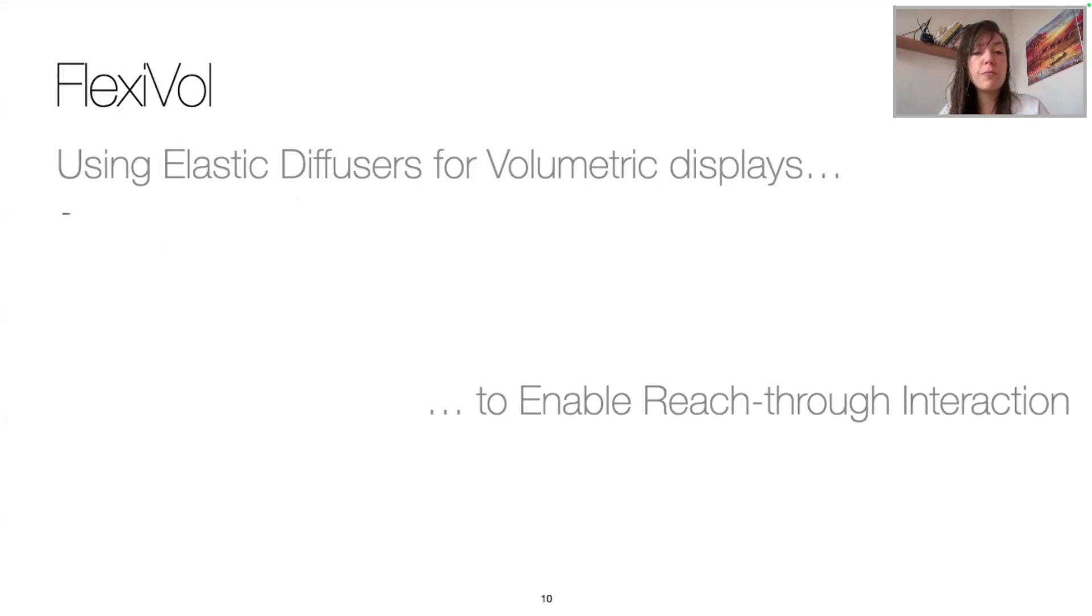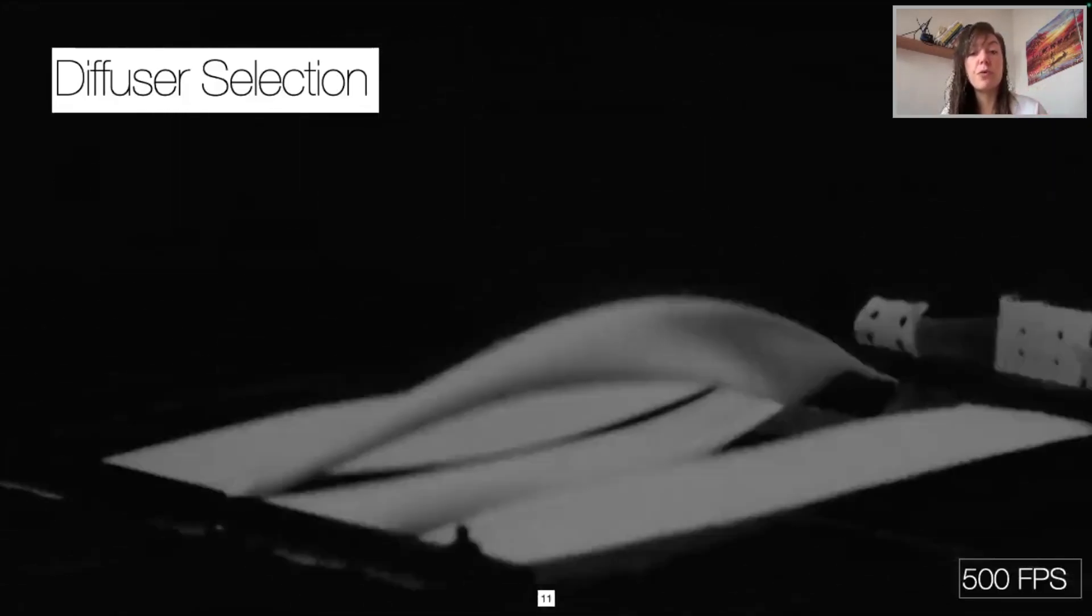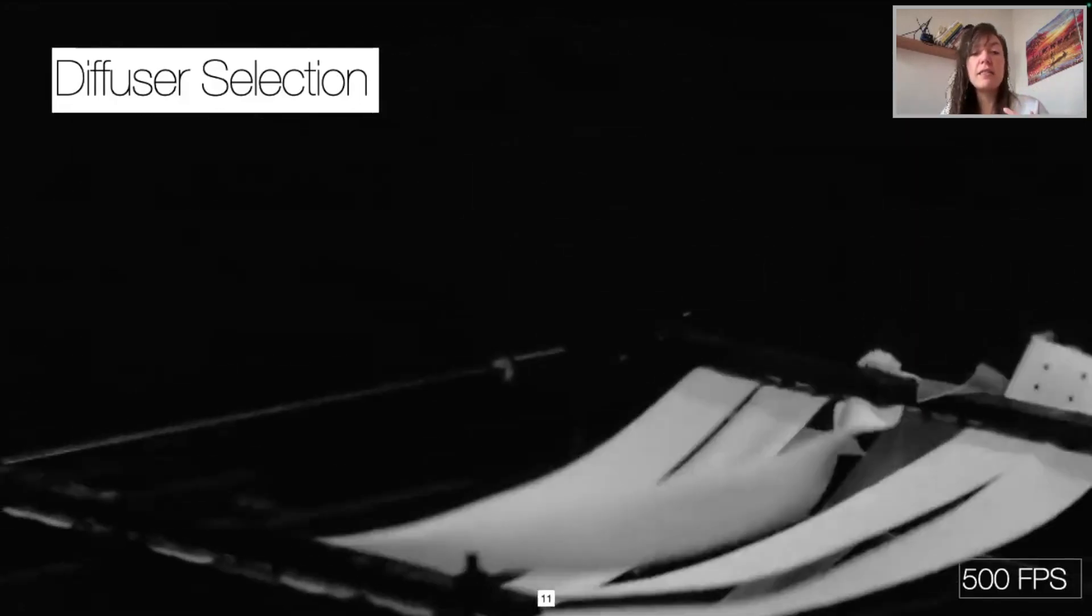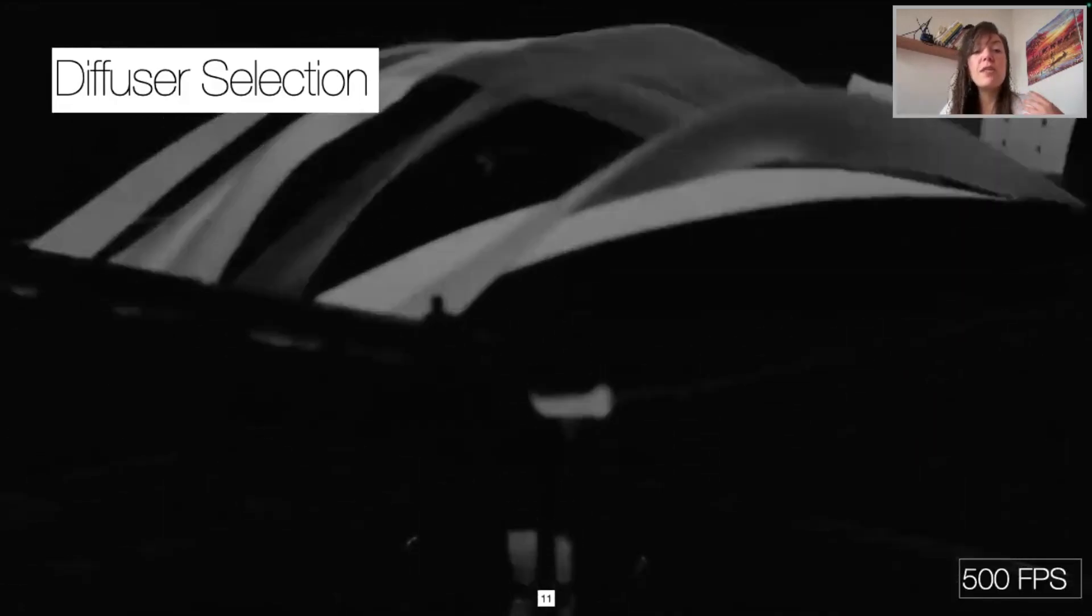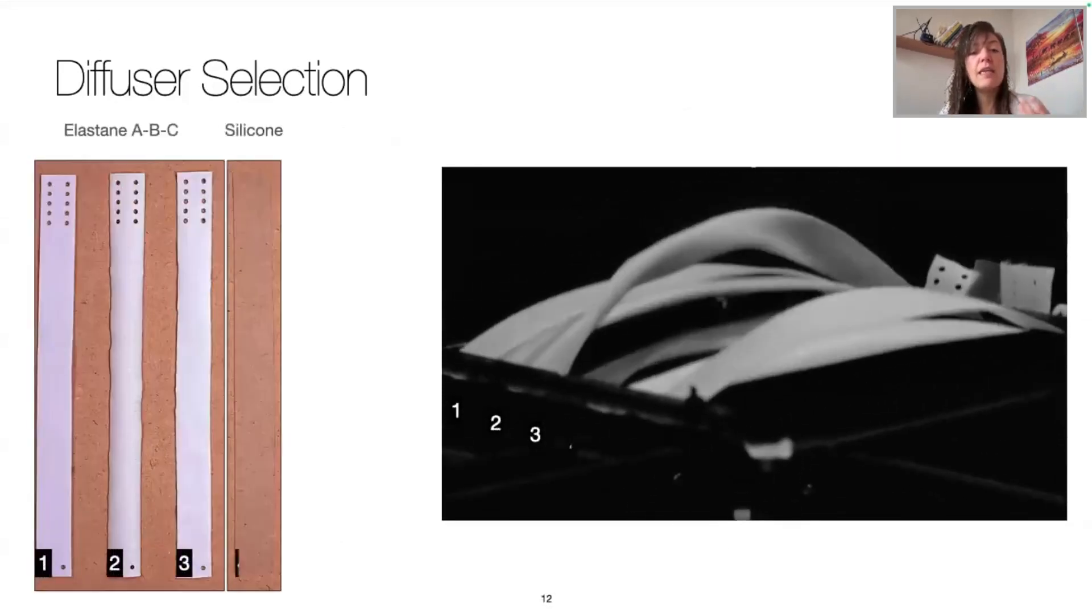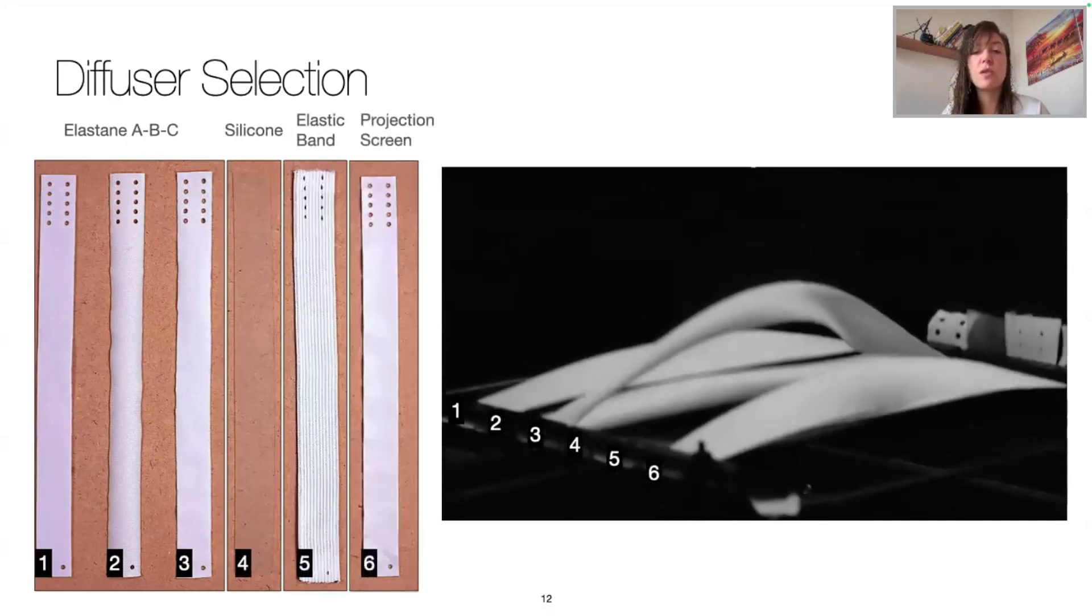So first, what properties should the elastic diffusers have? We studied mechanical, optical, and oscillatory properties. Elastic diffusers show different properties when put through oscillation and displacement: different amplitudes, resonances, deformation. So we pre-selected six materials: three different types of elastane, silicone, elastic bands, and finally a classic projection screen fabric.